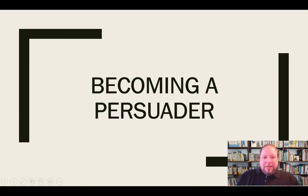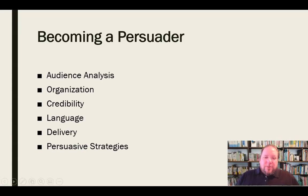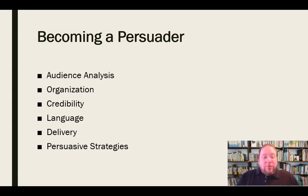In this video, I'd like to take a look at some of the different elements involved in becoming an effective persuader. We're going to be looking at things pretty much exclusively from the perspective of the person doing the persuading, not the audience themselves. When we're becoming a persuader, there are a variety of different elements we need to look at: audience analysis, organization, credibility, language, delivery, and persuasive strategies. We're going to break down each of these individually.